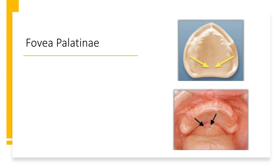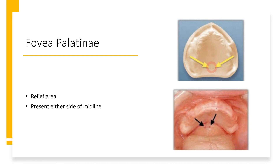Another area to keep in mind — one that isn't easily appreciated while taking dental impressions — is the fovea palatinae. As you can see in this cast as well as in the clinical picture, these are two openings just posterior to the soft palate and just anterior to the anterior vibrating line, present on either side of the midline. Relief should be provided because at times it can lead to discomfort for the patient.